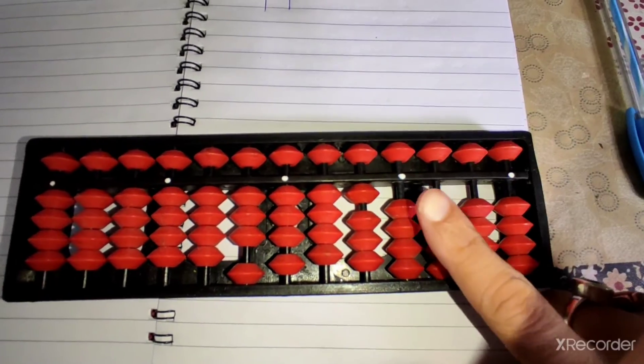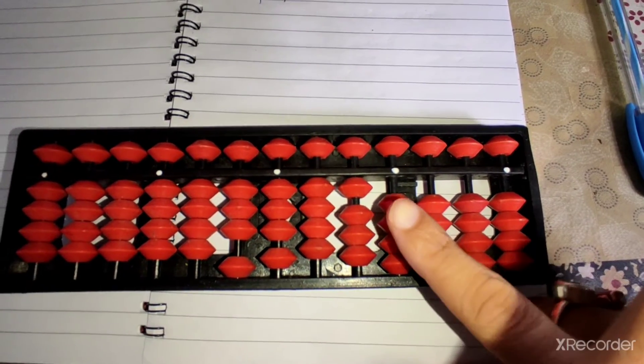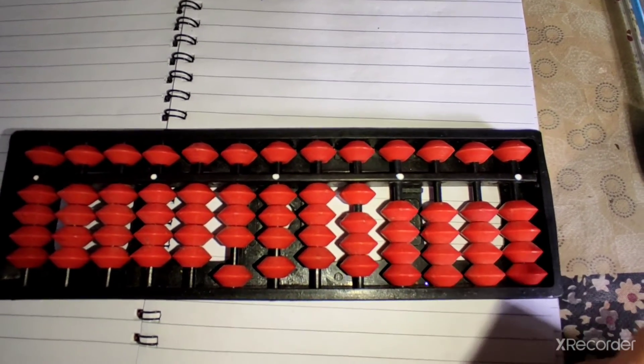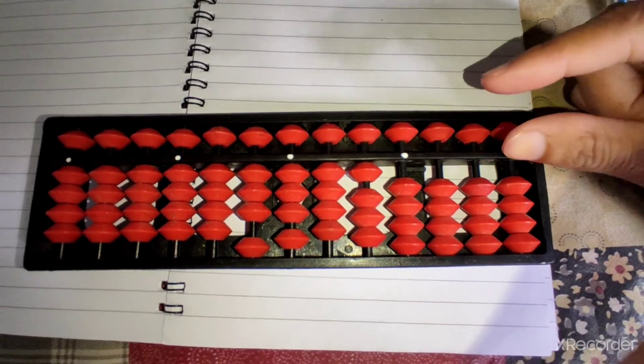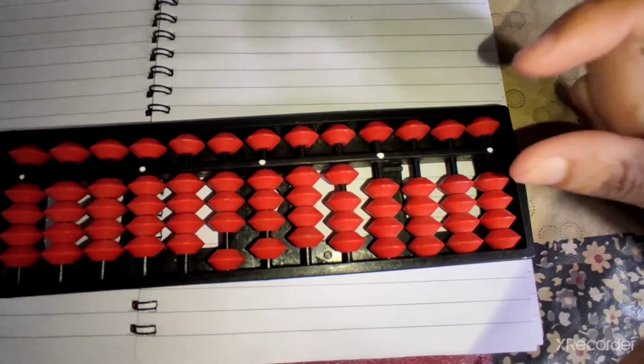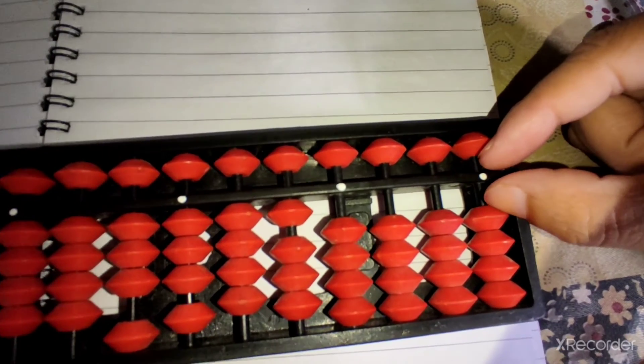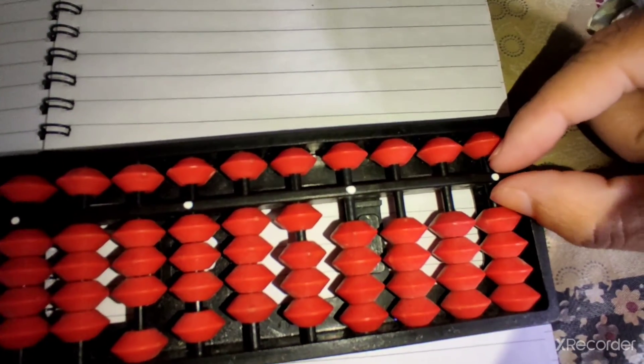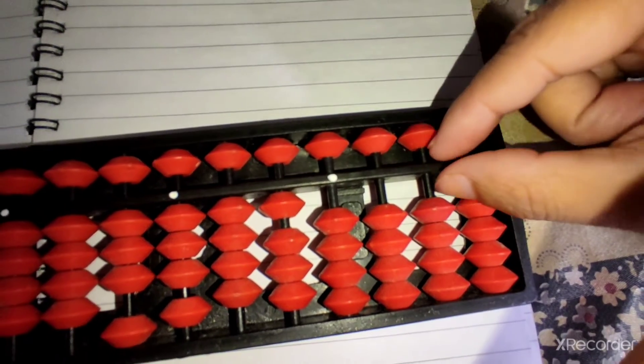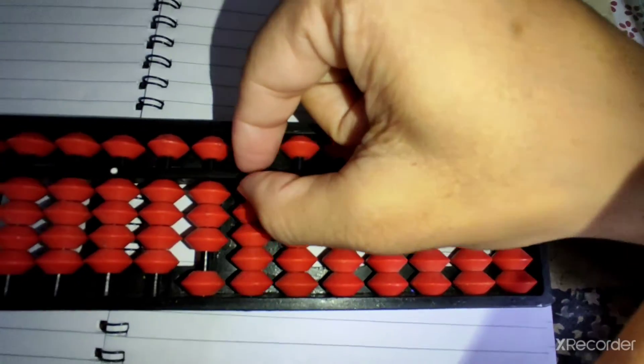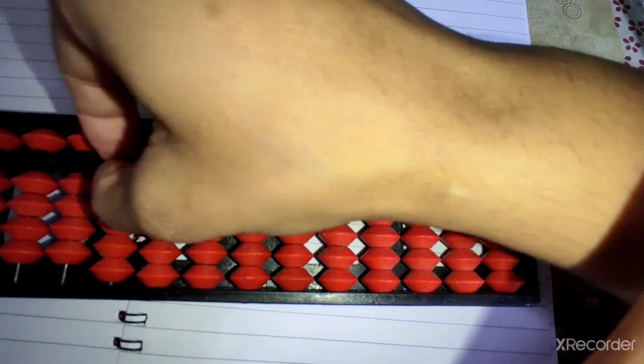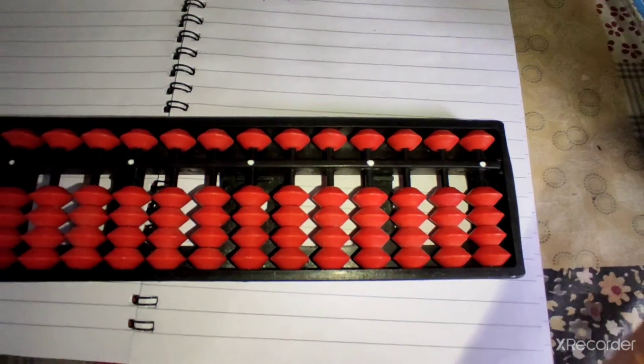Now, while we count, our answer line should be clear. So, before start counting, always clear your answer line using your butterfly fingers. From the right side to left side, you move your butterfly fingers in the answer line like this. As you can see, our answer line is clear now.